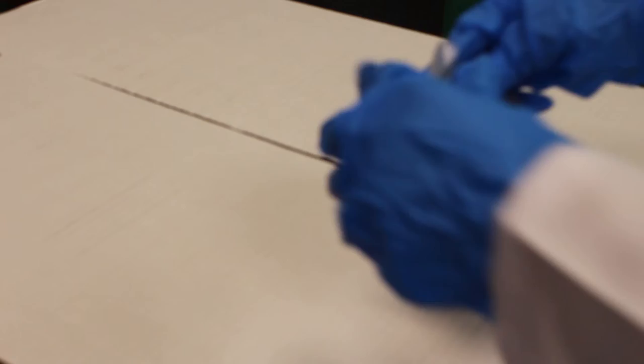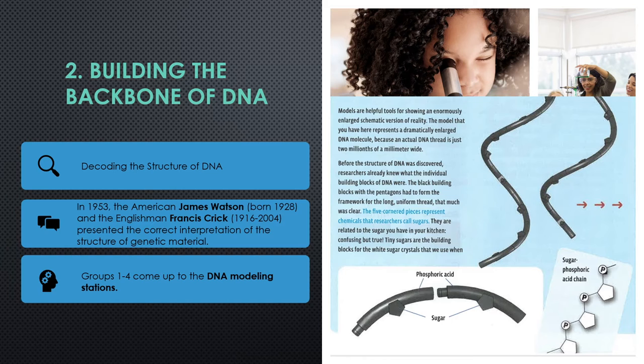And now for building the backbone of DNA. Here is a generic example of DNA. So we have all different structures here. In order to build the backbone of DNA, we first must decode the structure of DNA.